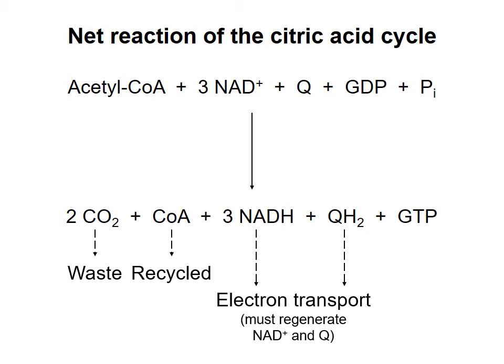And finally, the citric acid cycle also allows production of one GTP molecule, an ATP equivalent.